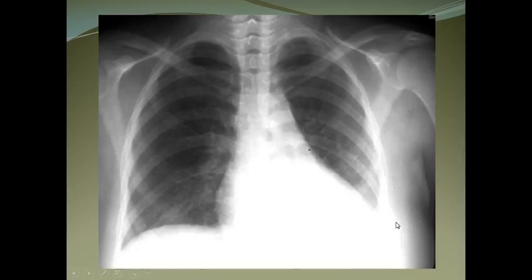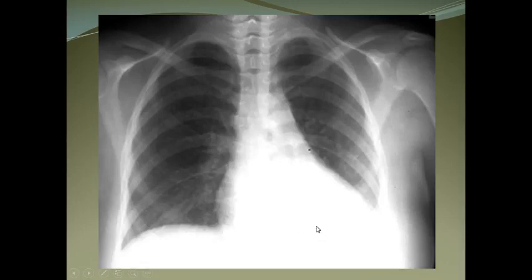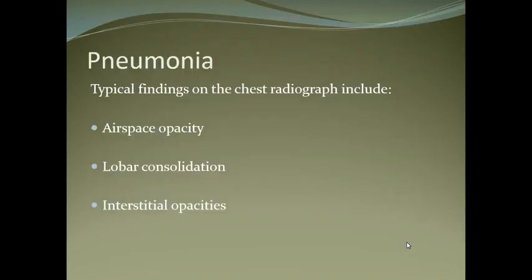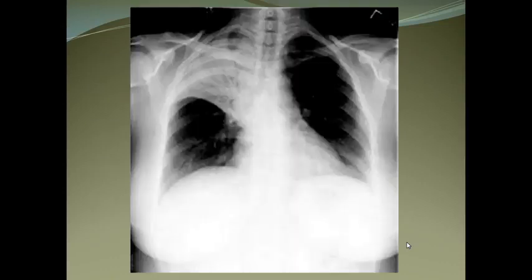This is a case of cardiomegaly along with some pleural effusion on the left, indicated by blunting of the left costophrenic angle. The heart is more than 50% of the thoracic width — measured by drawing a line across the heart and comparing it to the full chest wall width.